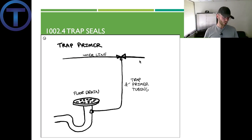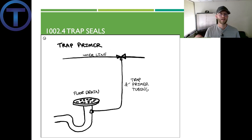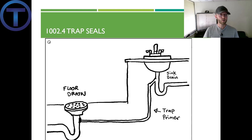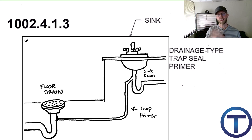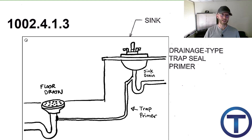Section 1002.4.1.2 talks about the reclaimed or gray water supply trap seal primer valve — basically the same thing but using gray water. Section 1002.4.1.3 gives us information about the wastewater supplied trap primer device. Here's an example: you have a sink with a Y-shaped fitting that's kind of upside down, intended to divert water from the drainage down into a pipe that feeds the floor drain to keep it wet. This one's not my favorite because we typically run a little half-inch tube — it used to be copper, now often PEX — and that little tube is going to fill up with drain scum and junk. I just don't think this is a great long-term trap primer option.